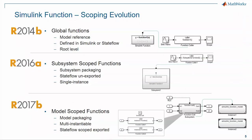Getting into the realization within Simulink, a core technology to enable that is the Simulink function, which was introduced in 14B. At that time, Simulink functions were global — you could call them with a function caller accessing that global name. In 16A, there was an enhancement to add scoping of functions with subsystems. And now in 17B, you can scope your functions with models, and it's possible to instantiate those models multiple times, giving you multiple instantiations of your Simulink function.